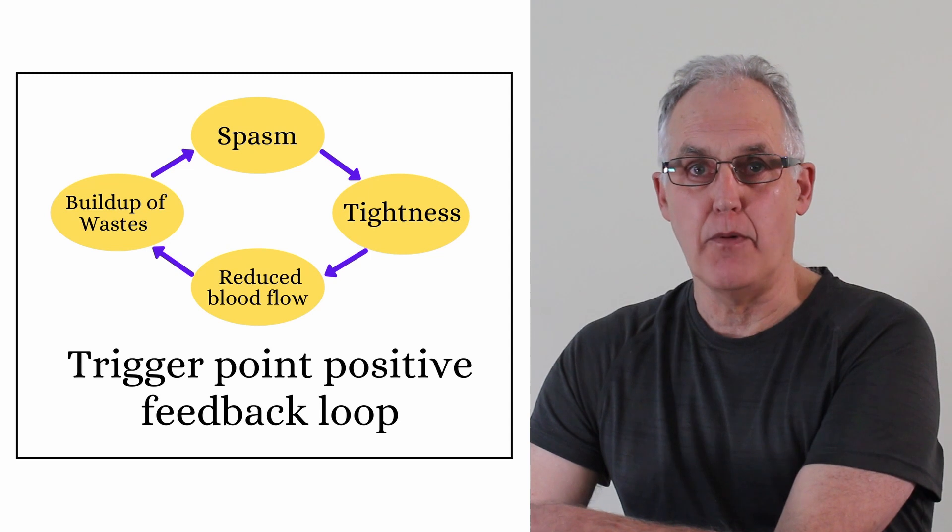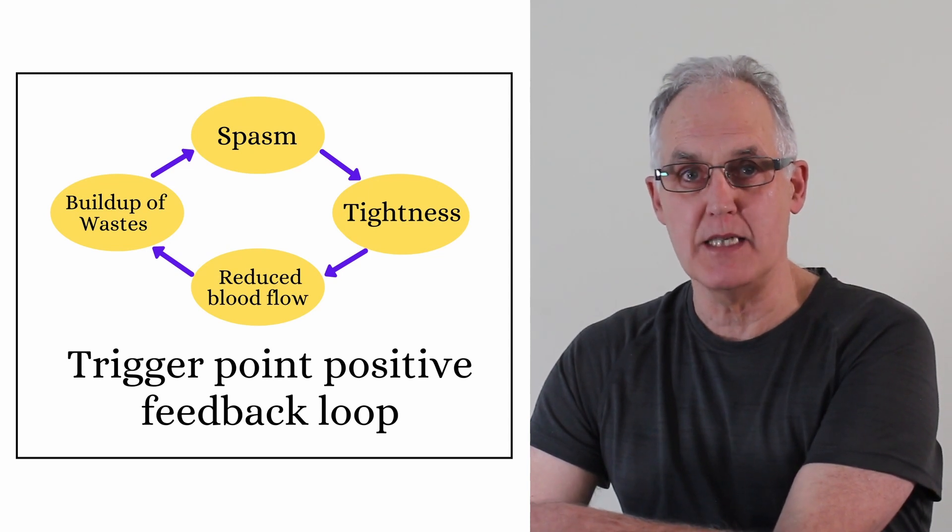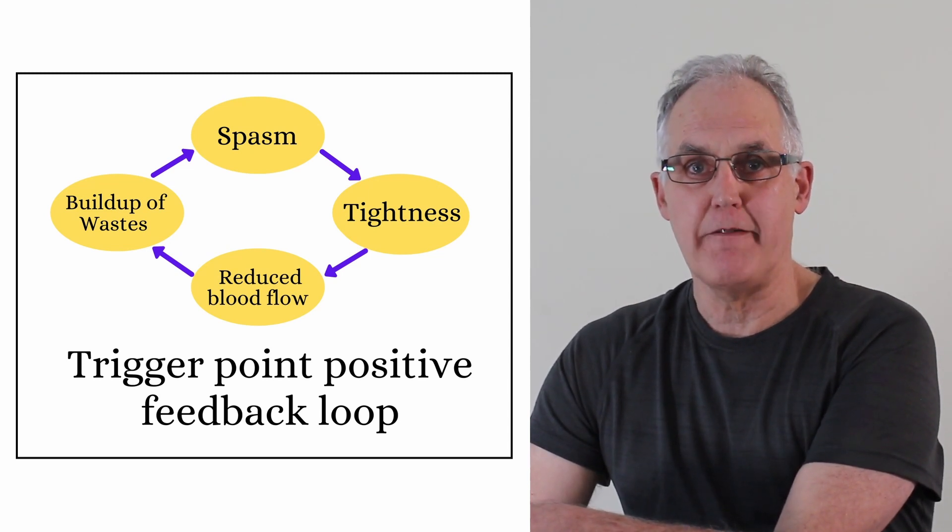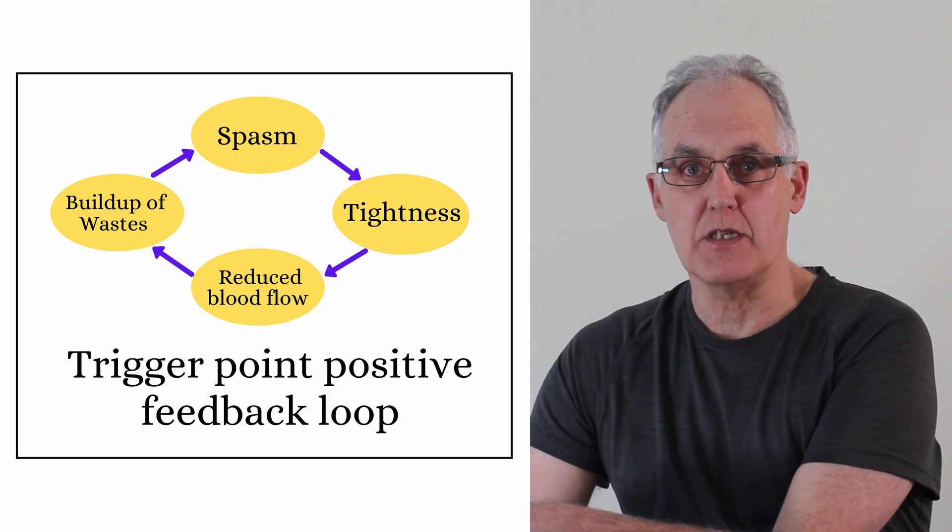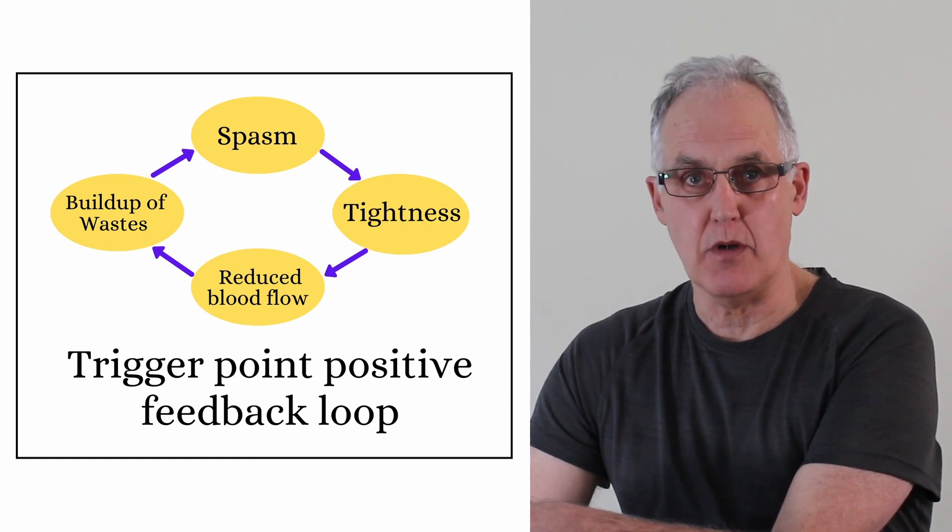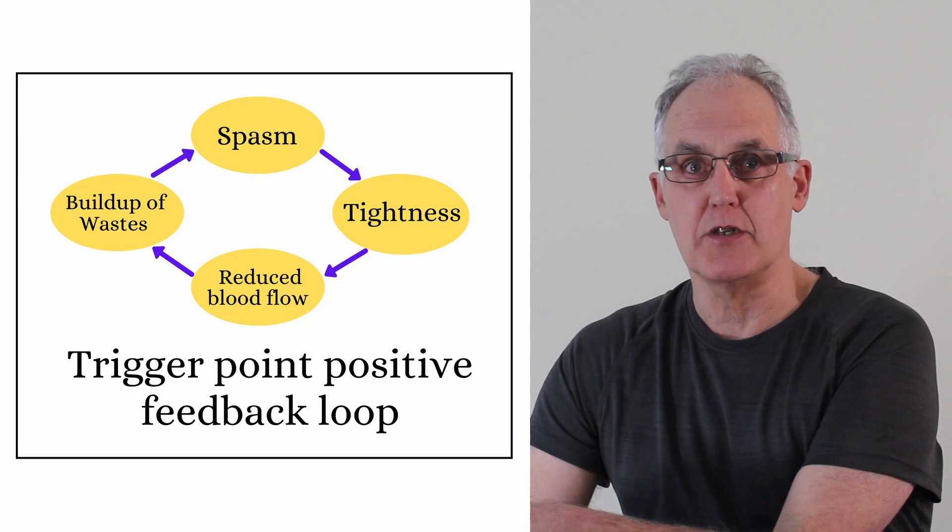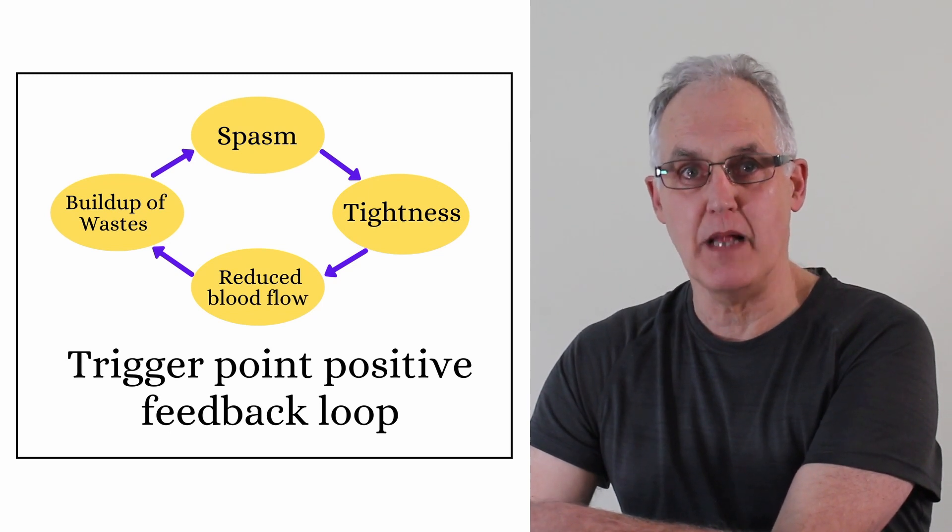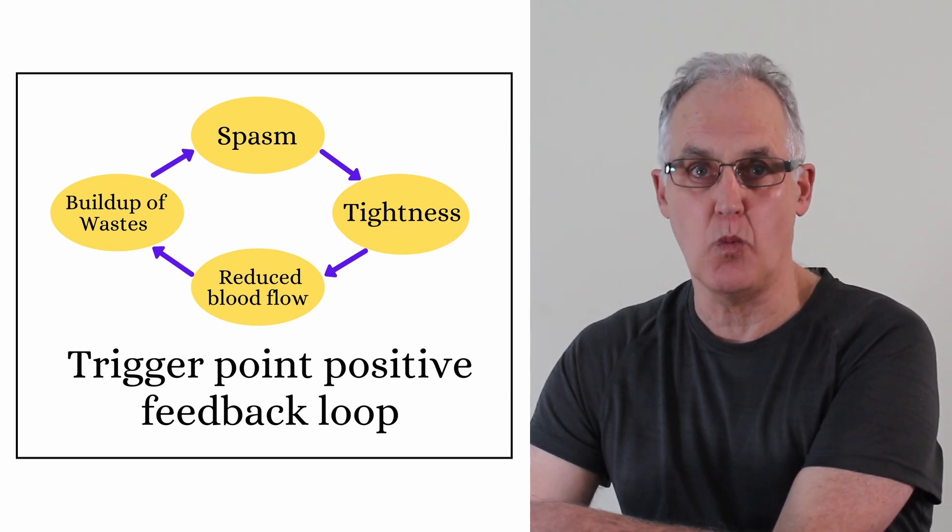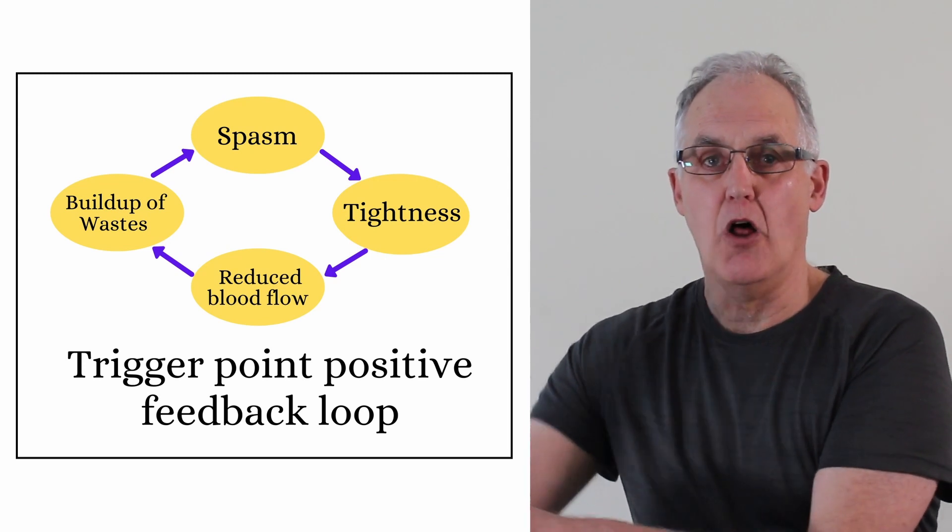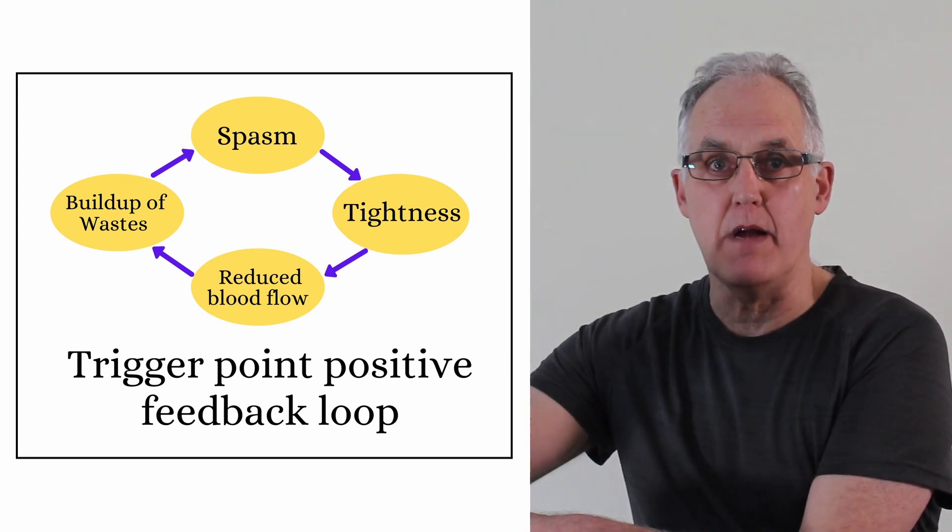Those same PhD scientists and their colleagues have done a lot of work on what trigger points are, what makes them tick, and why they're so tough to get rid of. Simply, what they've found is that trigger points are part of the muscle that have gone to spasm and this is locked on by a feedback loop. If you look at this diagram you'll see that the spasm tightens the muscle which puts pressure on the blood vessels restricting blood flow, which causes the buildup of toxic waste, which causes more spasm, and the whole thing just keeps going around and around.